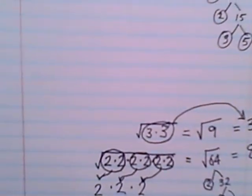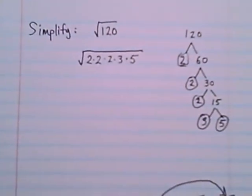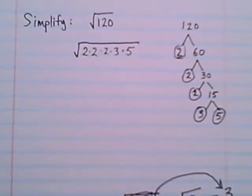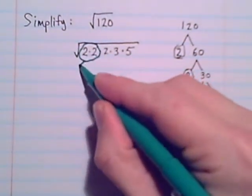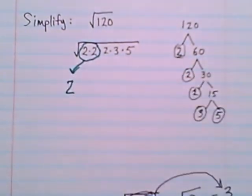So back to this problem, radical 120, I went for the prime factors. And now I'm looking for pairs of numbers. And I've got a pair of twos. Bring that out of the radical. One, two. Remember,